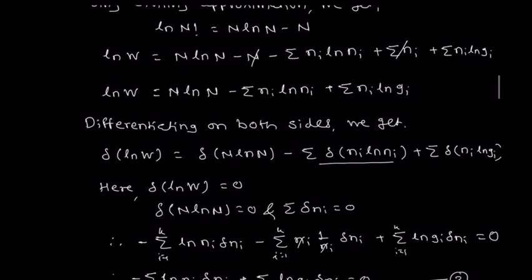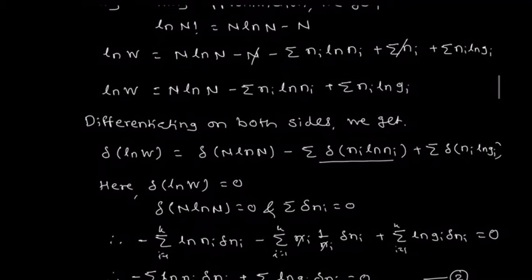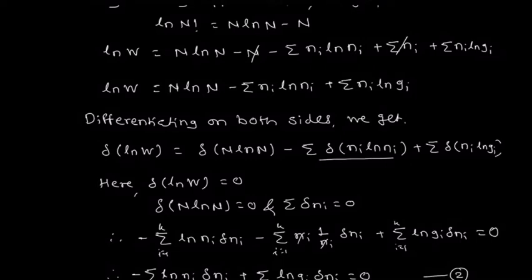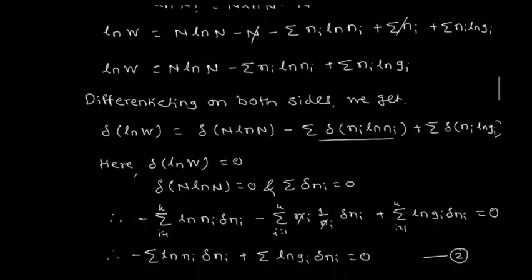Therefore using that condition the equation becomes: minus summation i equals 1 to k of log(ni)·δni, minus summation i equals 1 to k of (ni/ni)·δni (which is 0), plus summation of log(gi)·δni equals 0.